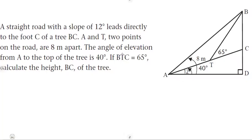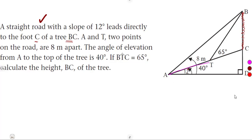We are given a straight road with a slope of 12 degrees. This road leads directly to the foot C of a tree BC. Points A and T are two points on the road that are eight meters apart — that is the length of AT, eight meters.